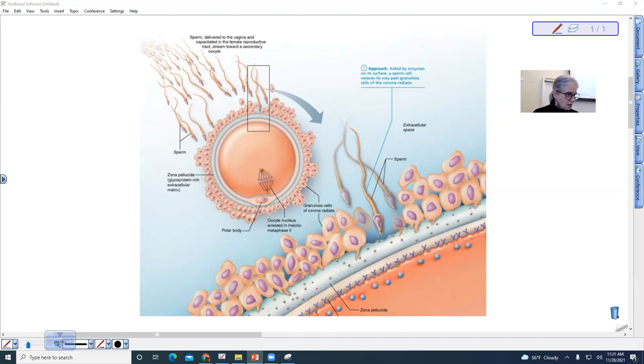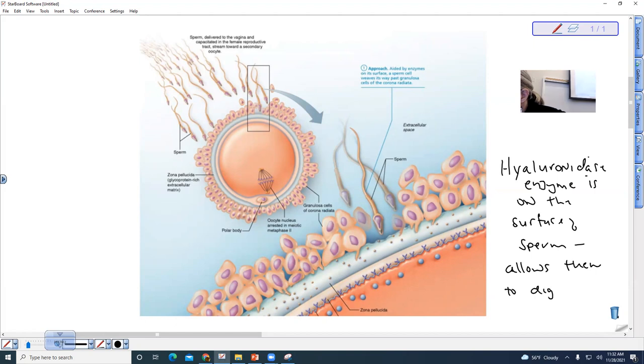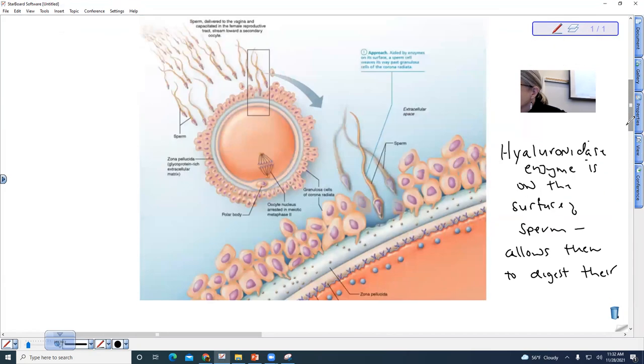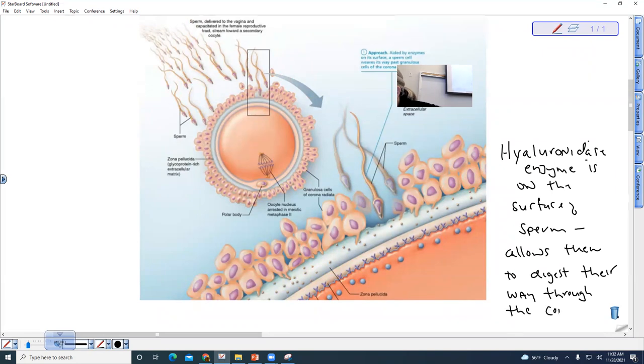And this is what is called hyaluronic or hyaluronidase enzyme. So hyaluronidase enzyme is on the surface of the sperm head. Now, this is not yet the acrosomal reaction, but this allows them to digest their way towards the zona pellucida. So it allows them to digest their way through the corona radiata.